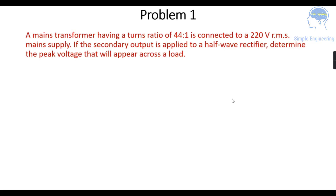The first problem we are going to discuss is about half-wave rectifiers. The problem is: a mains transformer having a turns ratio of 44 to 1 is connected to a 220 volt RMS mains supply. If the secondary output is applied to a half-wave rectifier, determine the peak voltage that will appear across the load.